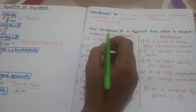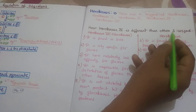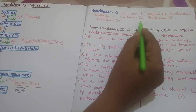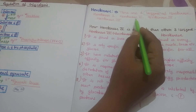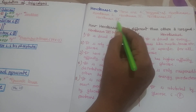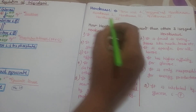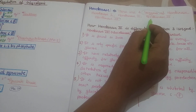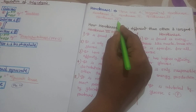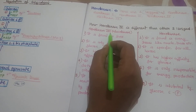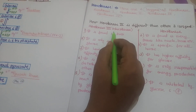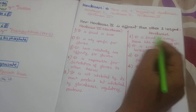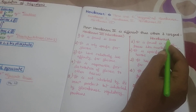Now, how is Hexokinase 4 different from the other three isozymes? Hexokinase 1, 2, and 3 perform almost similar functions, but Hexokinase 4 is slightly different. Hexokinase 4 is also called Glucokinase, while the other three — Hexokinase 1, 2, and 3 — fall into the general Hexokinase category.